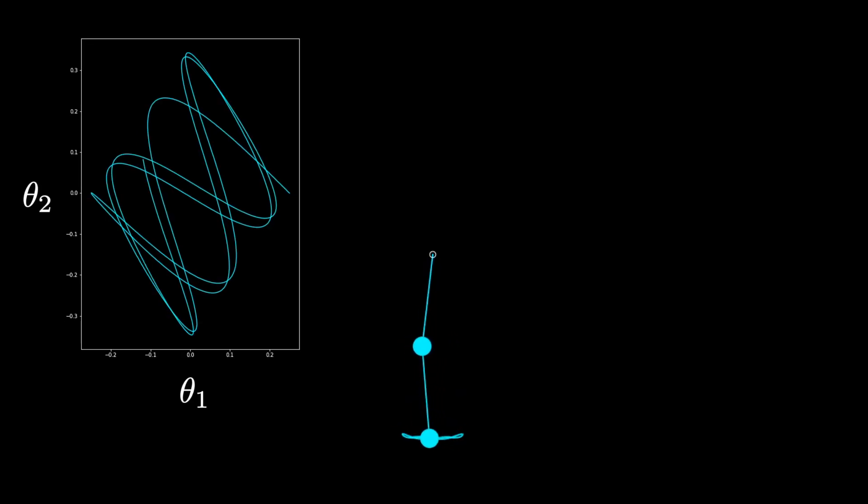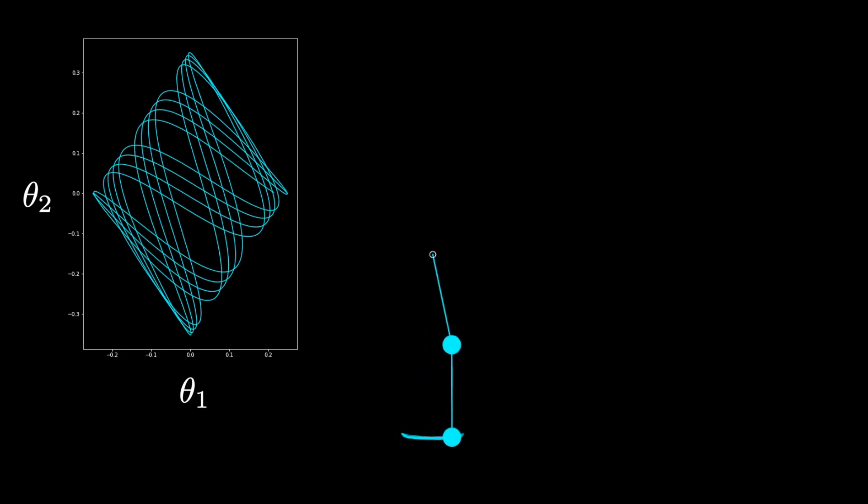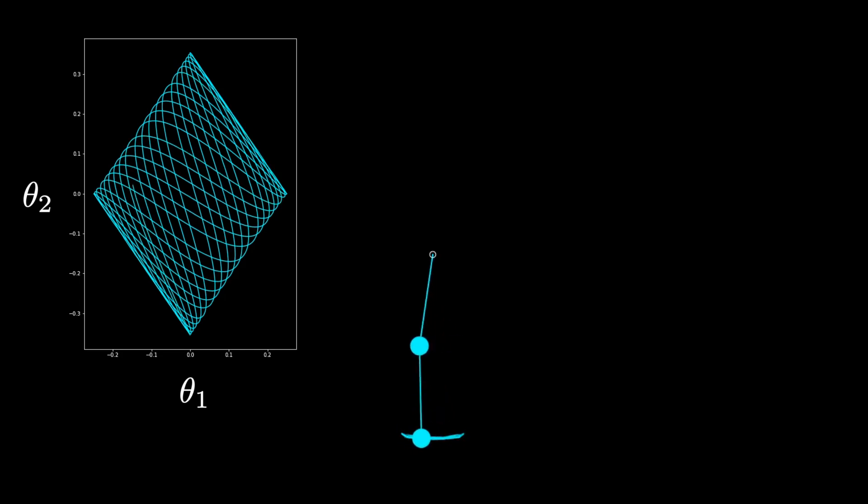Not very exciting, right? But look at what happens if we plot the angles against one another. We get this amazing curve. Interestingly, with the small angle approximation, the equations that govern this system reduce to being just a linear system of equations. And consequently, the motion is greatly simplified.